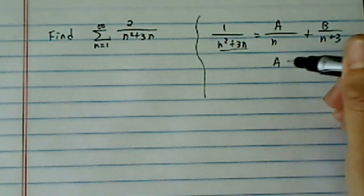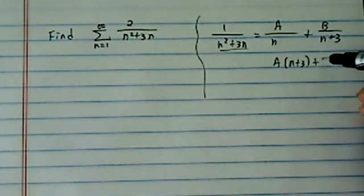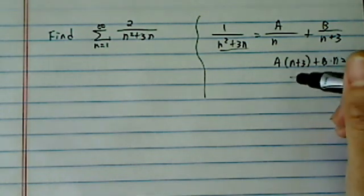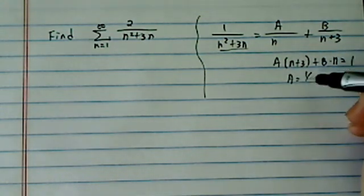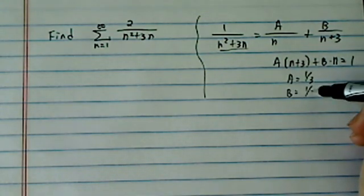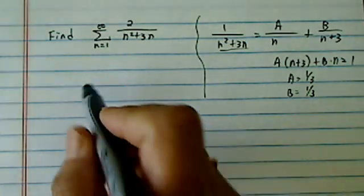If you walk through here, you have n plus 3 times A plus B times n, that's going to be equal to 1. And from here you'll see A is equal to 1/3 and B equal to minus 1/3. So let's just put that in there for now.